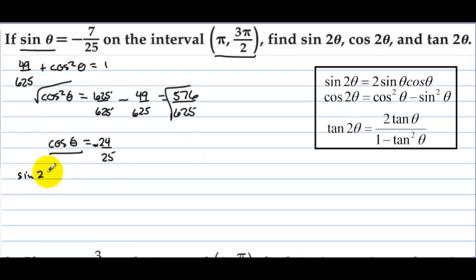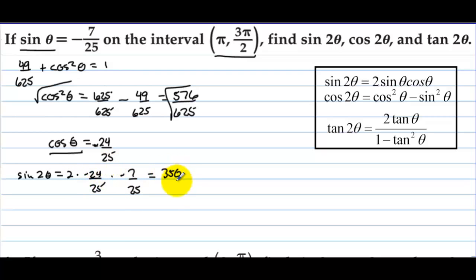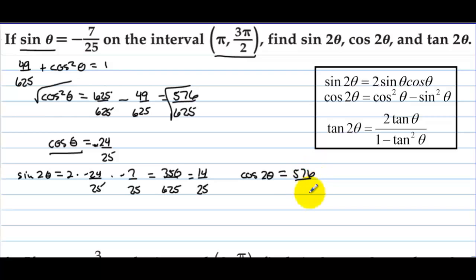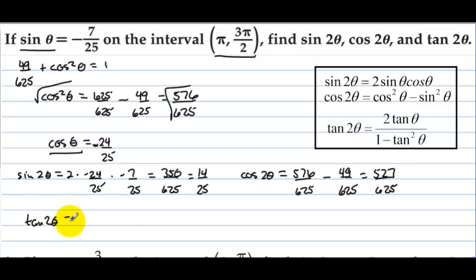Sine of 2 theta equals 2 times cosine (negative 24/25) times sine (negative 7/25). Multiplying out gives 350/625, which reduces to 14/25. Cosine of 2 theta equals cosine squared minus sine squared, which is 576/625 minus 49/625, equal to 527/625.